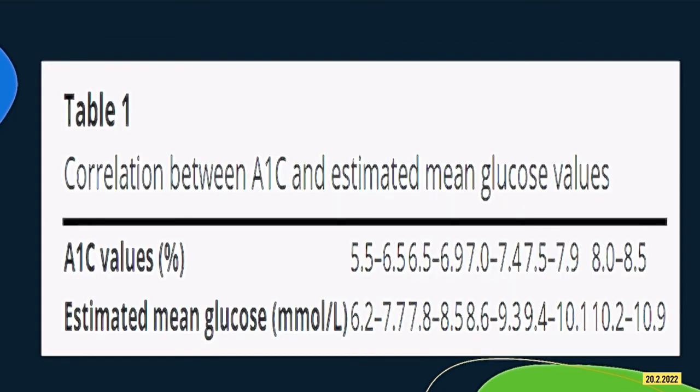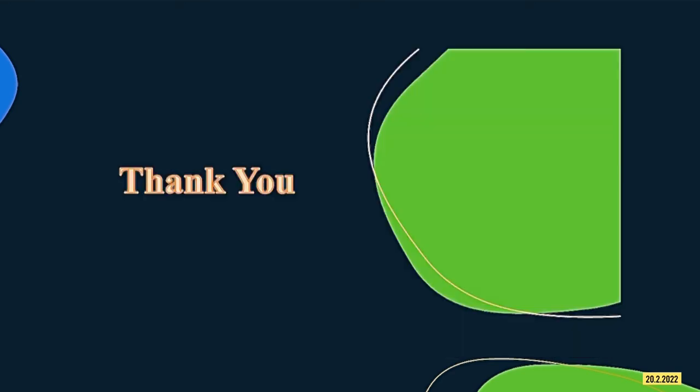This is the correlation between HbA1c value and estimated mean glucose values. For example, HbA1c of 5.5% to 7.5% corresponds to a mean glucose of 6.2 to 7.7 mmol/L. Thank you so much.